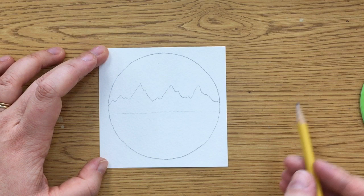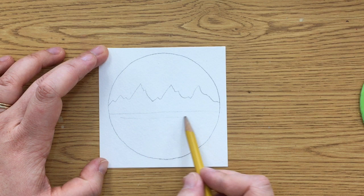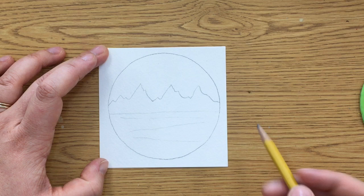Next thing we're going to do is draw some lines across, just lightly across like that to kind of look like the land.